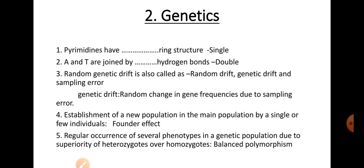The next question: Establishment of a new population from the main population by a single or few individuals is known as the founder effect. The independent population is formed by one or several individuals — this is commonly seen in honeybees, and in human beings too, whenever there is an earthquake, fragmentation, or habitat destruction, the founder effect is observed. It even has evolutionary significance.